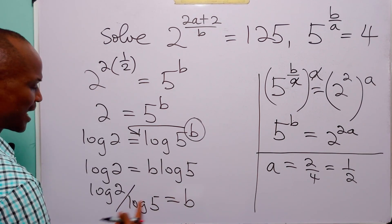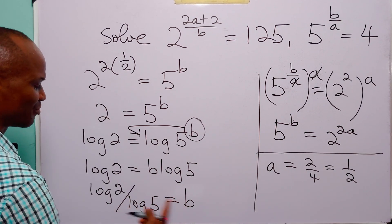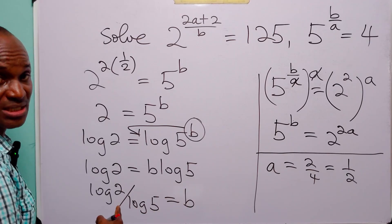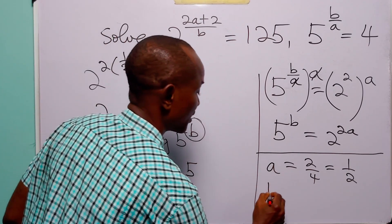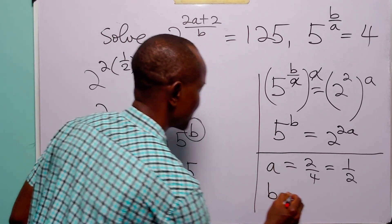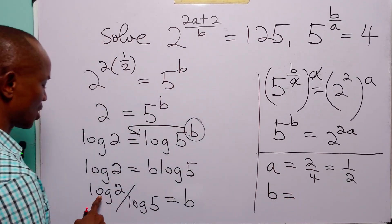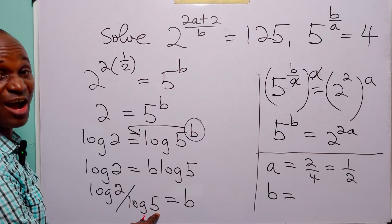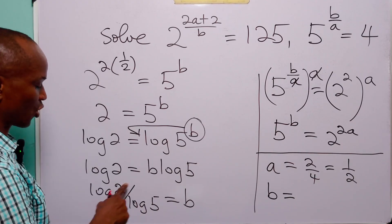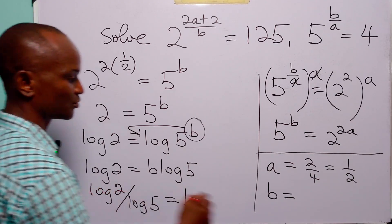Applying the change of base formula to this expression, we have that B is equal to log base 5 of 2.